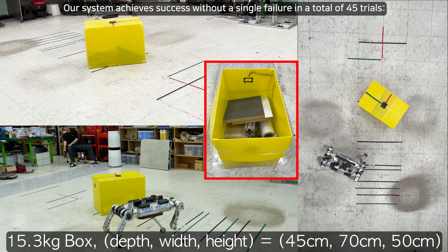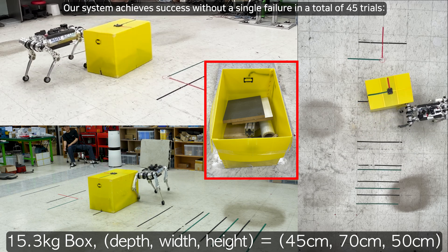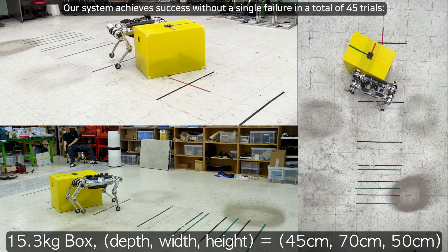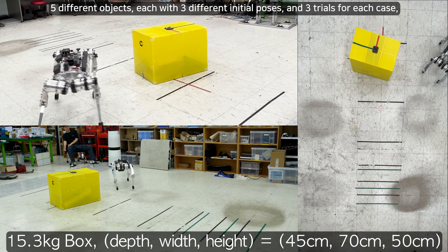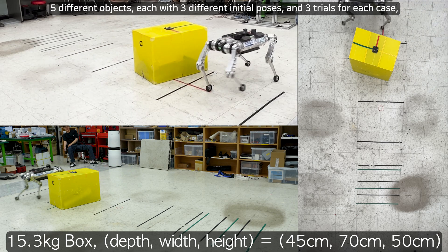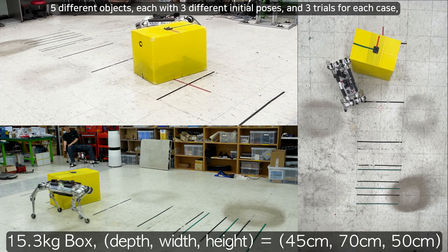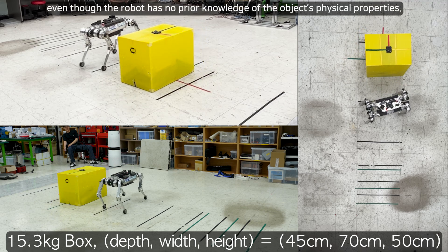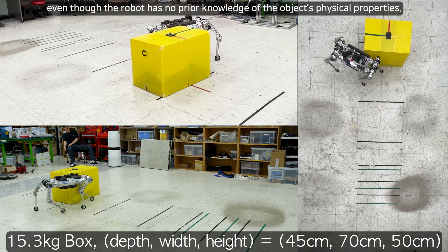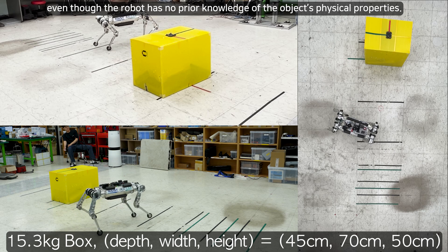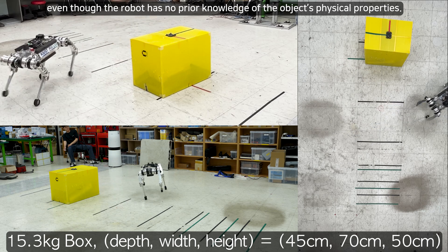Our system achieves success without a single failure in a total of 45 trials: five different objects, each with three different initial poses, and three trials for each case, even though the robot has no prior knowledge of the object's physical properties.